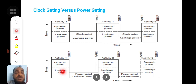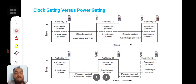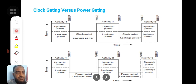Here, leakage power is present, but about half of the leakage power is reduced during the power gating time. While the circuit is in sleep, the power-gated leakage is very low. This is how most of the blocks of a functional chip will be in sleep mode. While these blocks are in sleep, we apply power gating, not just clock gating.